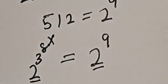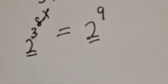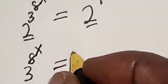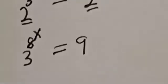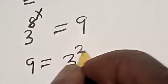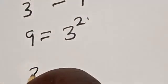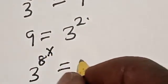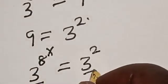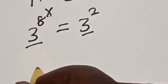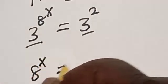They have the same base 2, so we work with the exponent. Then we have 3 raised to power 8 raised to power x is equal to 9. Also, 9 is equal to 3 squared, so 3 raised to power 8 raised to power x is equal to 3 squared. They have the same base 3, so we are left with the exponent: 8 raised to power x is equal to 2.